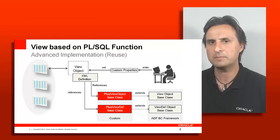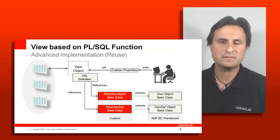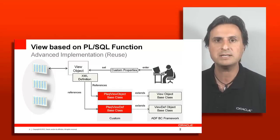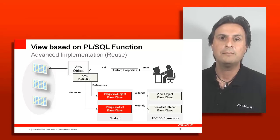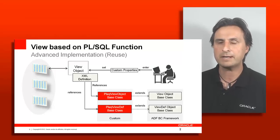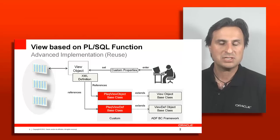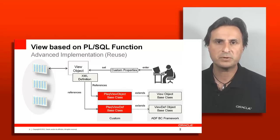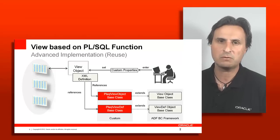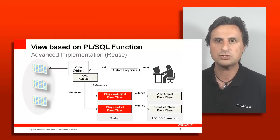There is a second class in this diagram — the view object definition class — which is needed to read the custom properties in. That's why I called this approach advanced: it's more work. The Fusion Developer Guide also has an example of accessing custom properties. This reusable architecture is worth pursuing if you have many view objects requiring PLSQL procedures. If you only have a few, the non-reusable approach is fair enough; but if you have a lot of PLSQL to integrate, think about the generic class.